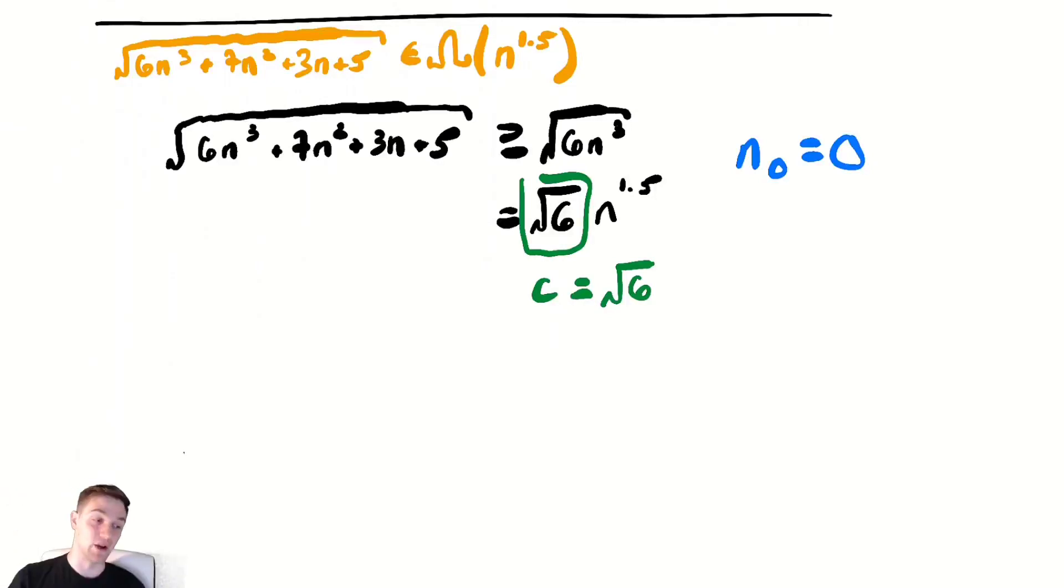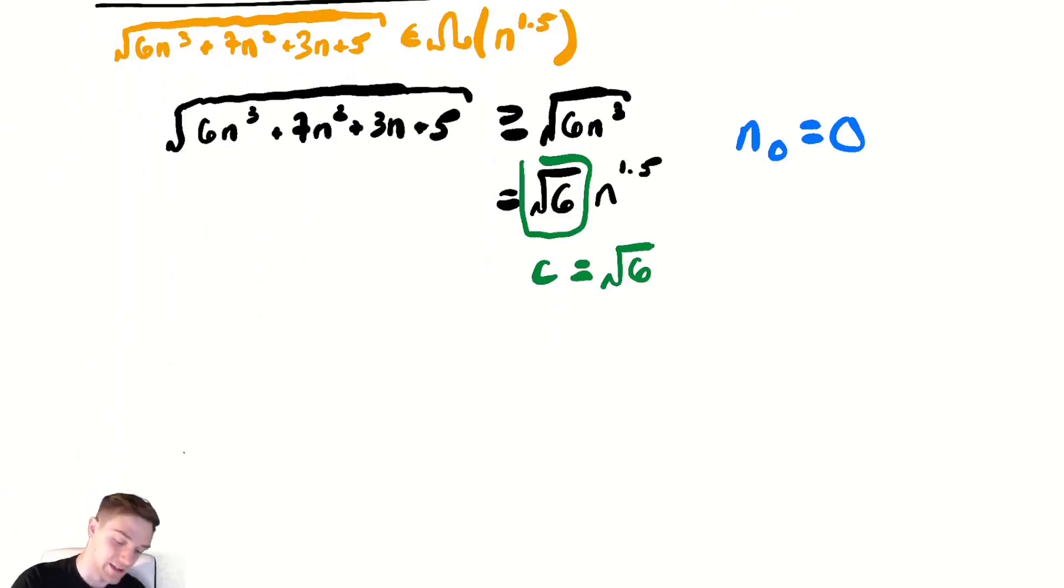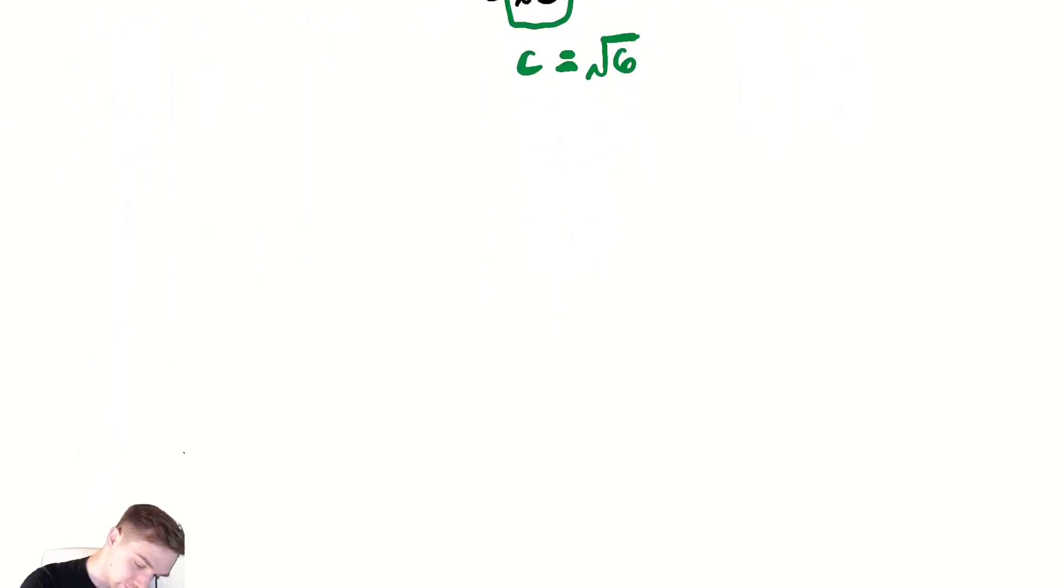Now we've shown it's in big O and it's in big omega, therefore it must be in big theta. So √(6n³ + 7n² + 3n + 5) must be in theta of n to the 1.5.